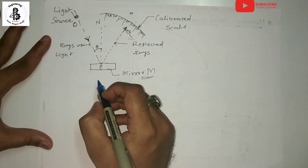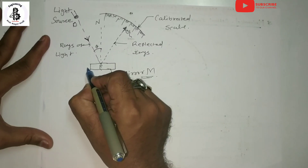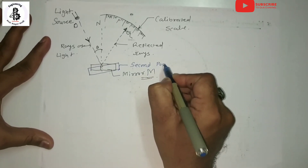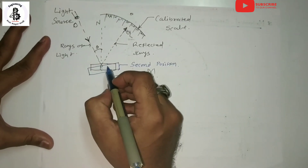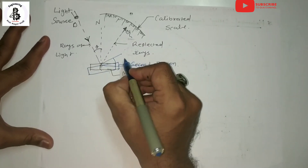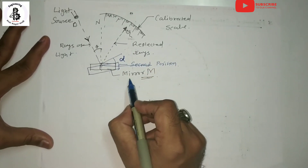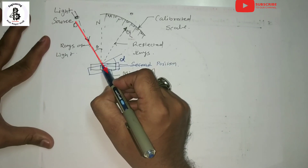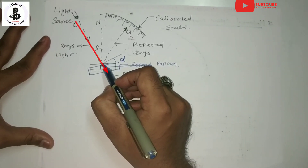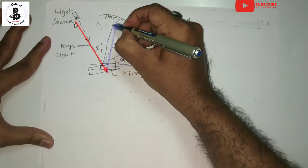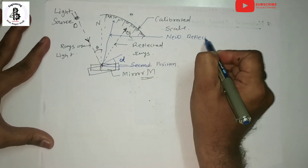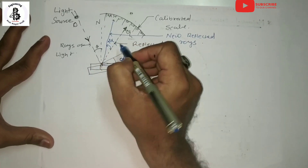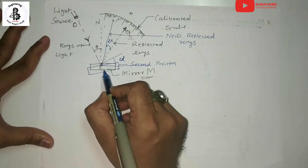Now suppose there is a certain movement of the mirror to a new second position. This new position is tilted by an alpha angle with the vertical. Due to this tilt, the new reflected rays move. These movements will be about twice that particular alpha angle — so the deflection of the reflected ray is twice the tilted angle alpha of mirror M.